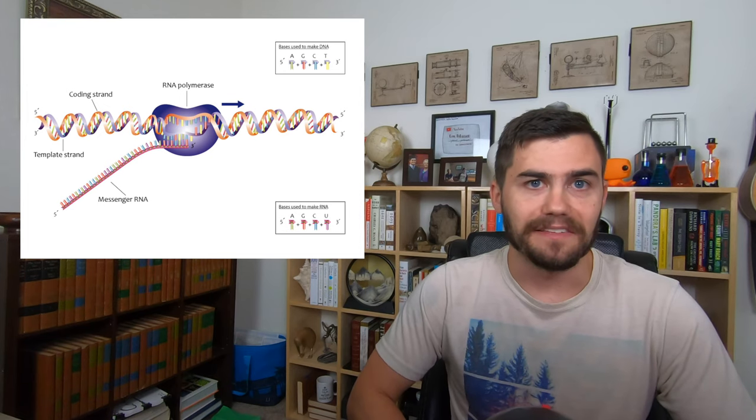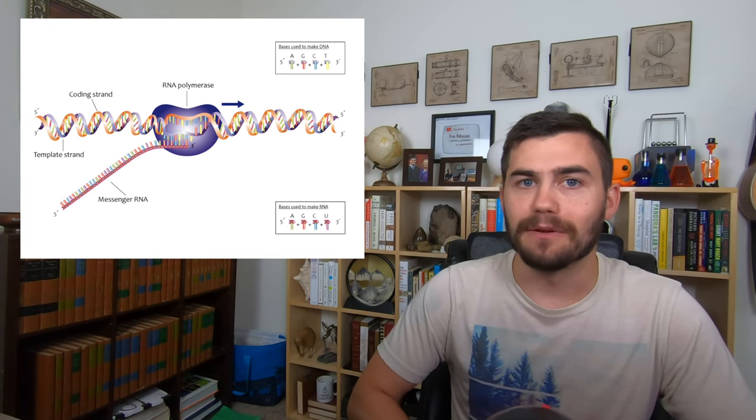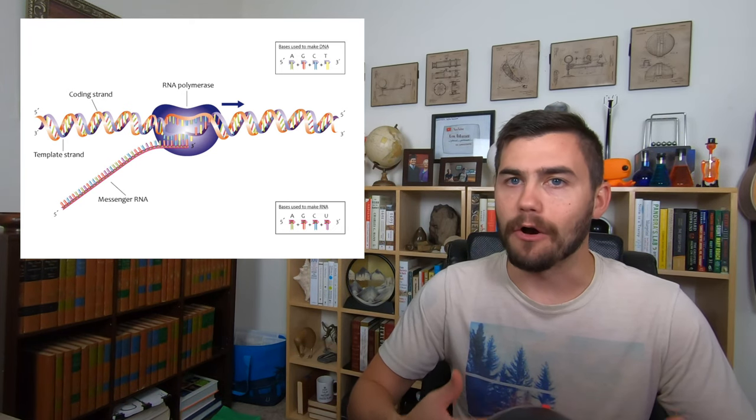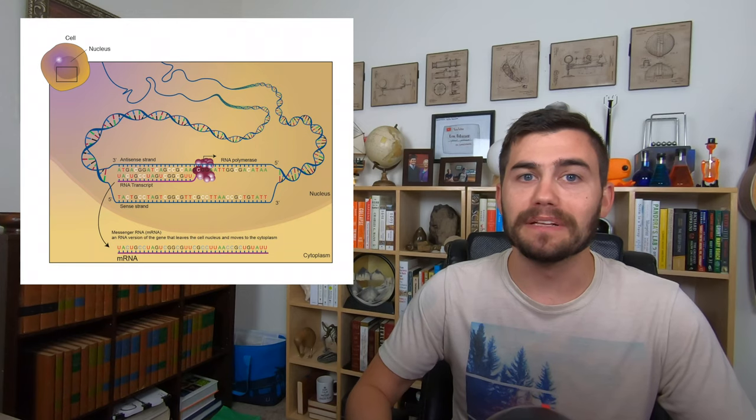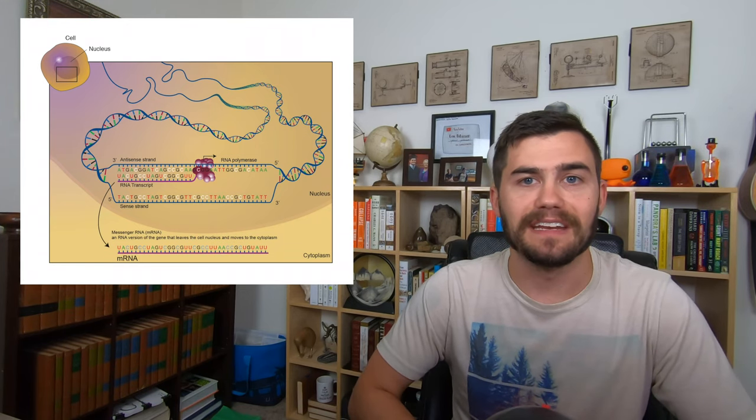First up is messenger RNA. Messenger RNA is a ribbon-like strand of RNA nucleotides. Messenger RNA is made directly from the DNA molecule during the transcription process. In short, the DNA opens up and an enzyme builds the messenger RNA molecule by reading one side of the DNA molecule.